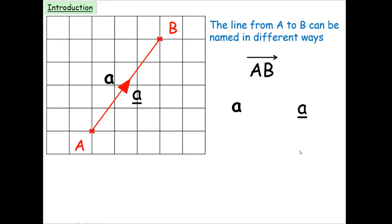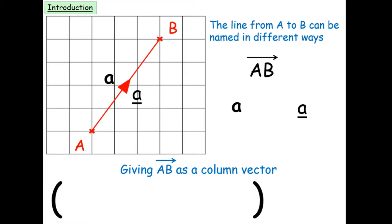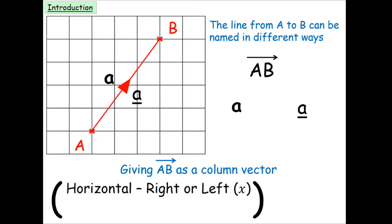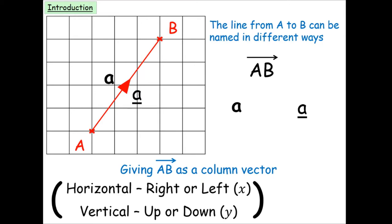When writing column vectors, we write them in brackets with two values, one above and one below. The top value tells you the horizontal distance — right is positive, left is negative. The second value is the vertical distance — positive for up, negative for down. In this example, travelling from A to B, you go three squares to the right and four squares up, so the column vector is (3, 4).